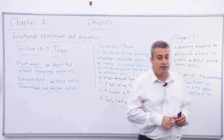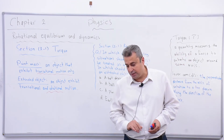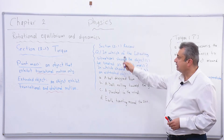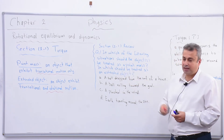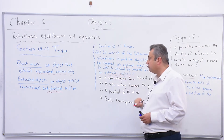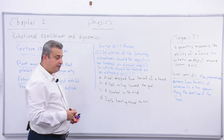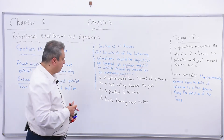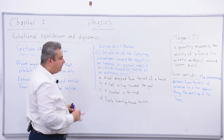By the way, this is important - it has appeared more than once in the general physics exam. Do not skip any subject in physics; everything is important. There is a question in the section related to this idea: 'In which of the following situations should the object be treated as a point mass?' They are asking for classification - point mass or extended object - and it has been in the general exam.